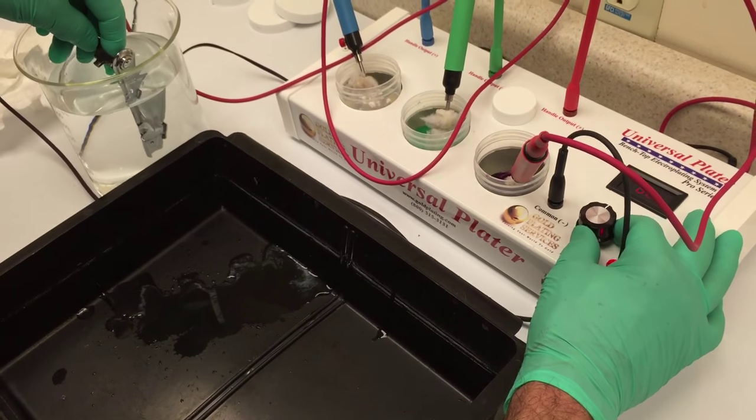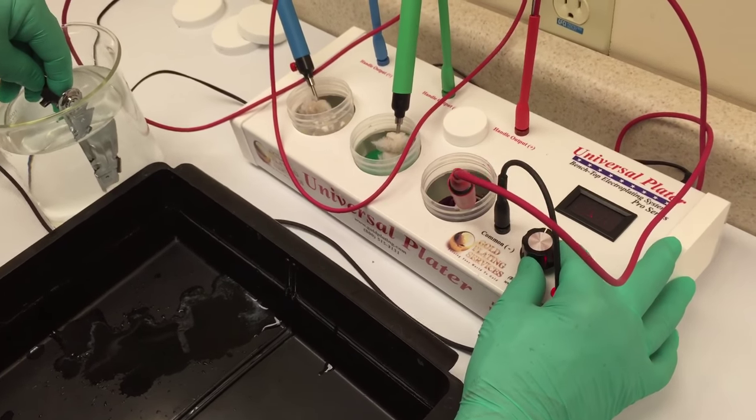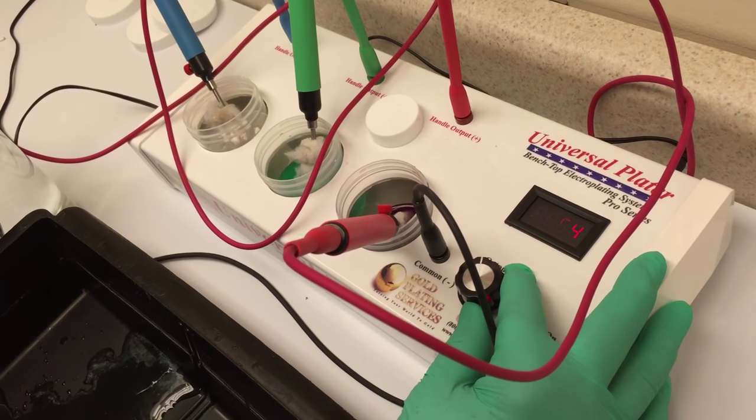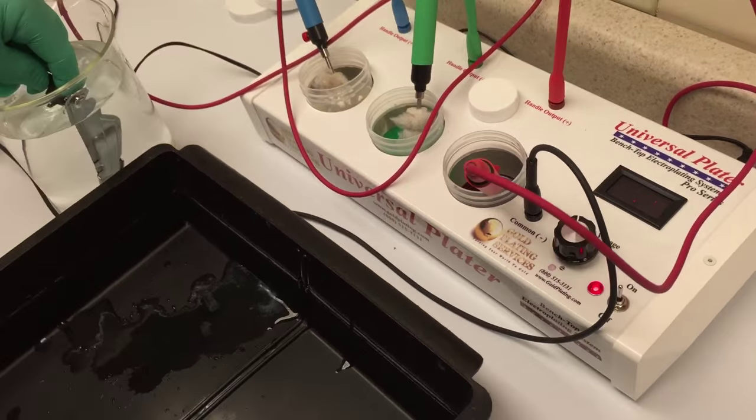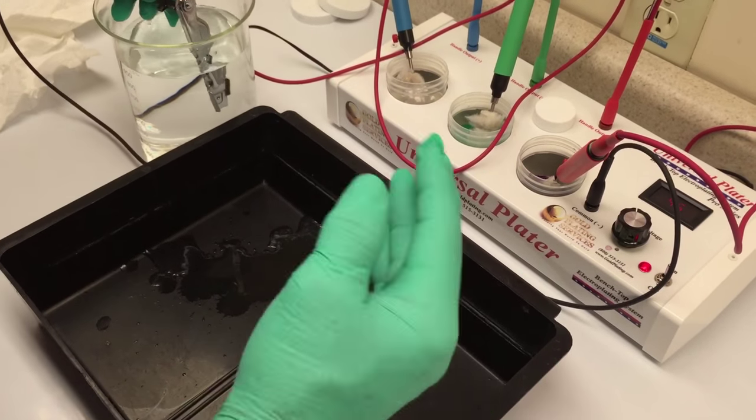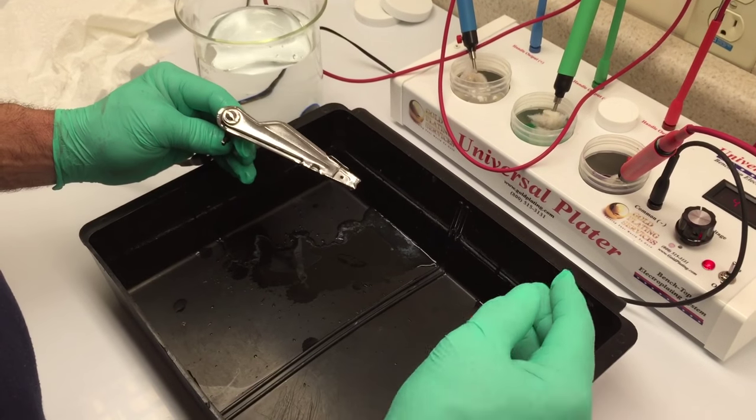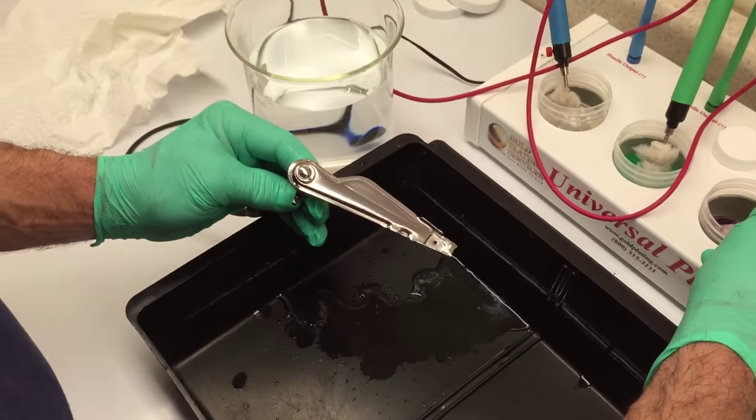Now for the gold solution, I'm going to turn the voltage down. I'm going to turn it down so the initial voltage is about four and a half volts, and when I begin the plating, the voltage will drop a little bit further.